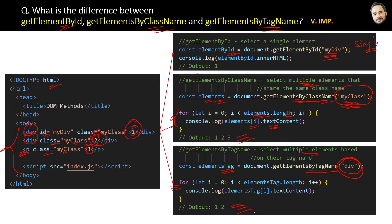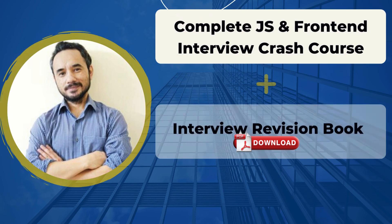which are the text content of the first and second elements respectively. That is the difference between these three: the first one selects only a single element, the second selects multiple elements based on class name, and the third selects multiple elements based on tag name.